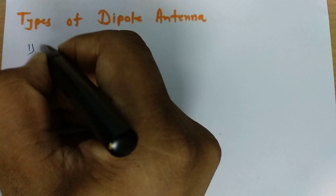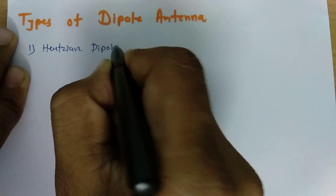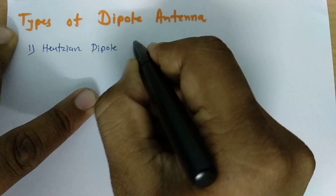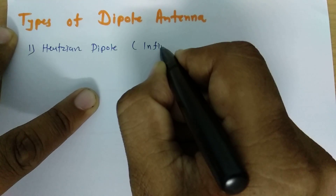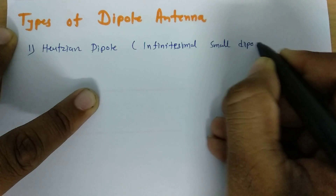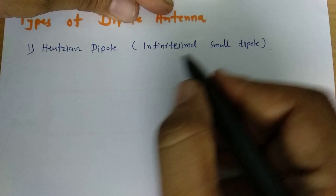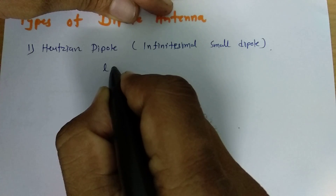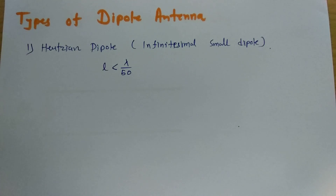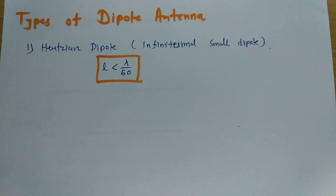The first dipole antenna is the Hertzian dipole, also referred to as the infinitesimally small dipole. When we talk about this Hertzian dipole or infinitesimally small dipole, the length of that dipole is less than lambda by 50. So if the length of the dipole is lower than lambda by 50, then that dipole will be a Hertzian dipole.